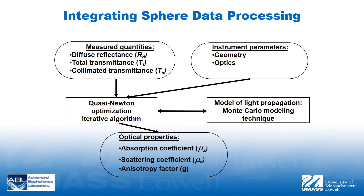An inverse Monte Carlo algorithm was used to determine the optical properties from the measured quantities. The Monte Carlo technique took into account the exact geometrical and optical parameters of the experimental arrangement and was incorporated as a forward procedure into a quasi-Newton inverse algorithm. The inverse technique allowed determination of absorption coefficients, scattering coefficients, and anisotropy factors from measurements of total transmittance, collimated transmittance, and diffuse reflectance, under the assumption of the Henyey-Greenstein scattering phase function.